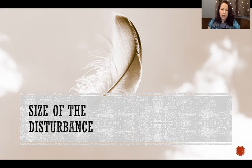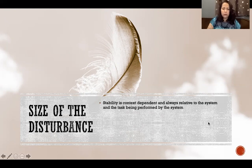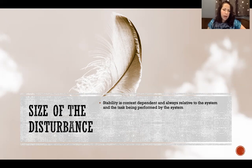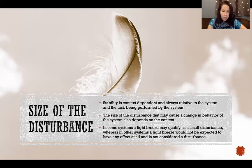Like a feather on a table: blowing on it or a small breeze would be a sufficient disturbance to cause it to move. But if I put a book on the table and blew on it, that would not be considered a small disturbance — it would take something like a hurricane to move that book. Stability is context dependent. The type and size of the disturbance that qualifies as the smallest disturbance depends on how big and heavy the object is and what kind of disturbance would be expected to have any effect at all.